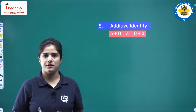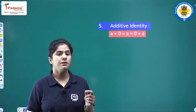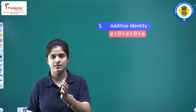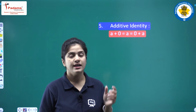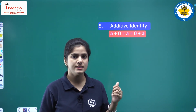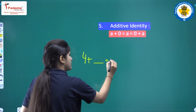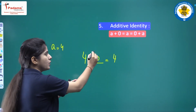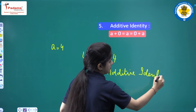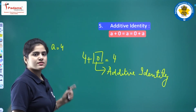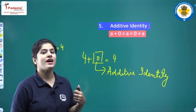The fifth property is additive identity. This is about adding a number to any integer such that the result is that integer itself. If A equals 4, what should I add with 4 to get 4? We add 0. So 0 is the additive identity, because if we add 0 to any integer, we get that integer only.